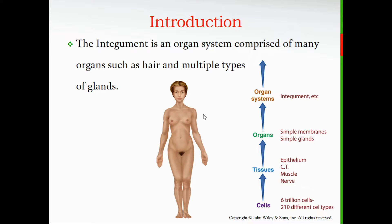The integument is an organ system comprised of many organs such as hair and multiple types of glands. Remember our structural levels of organization: cells make up tissues, tissues make up organs, organs make up organ systems — and your integumentary system is made up of different organs.